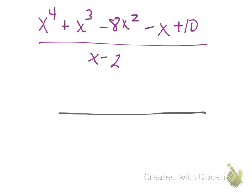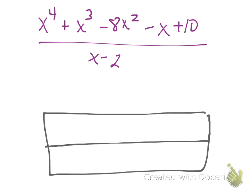I'm going to do this with a generic rectangle. Starting off with my generic rectangle, I'm going to take the x minus 2, what I'm dividing by, and I'm going to put that on the side.